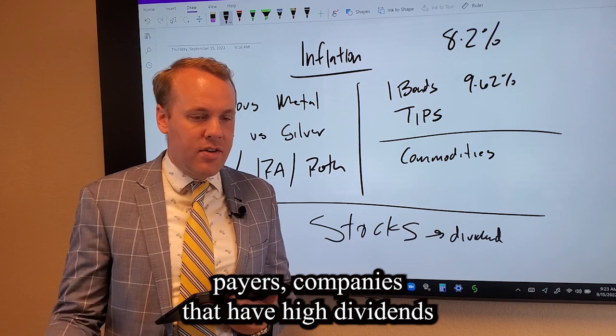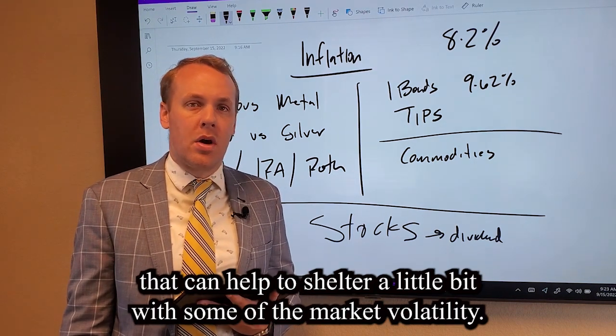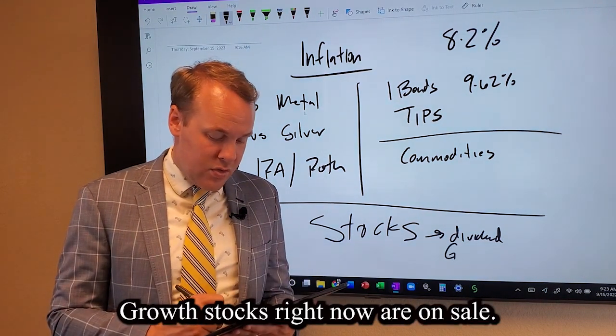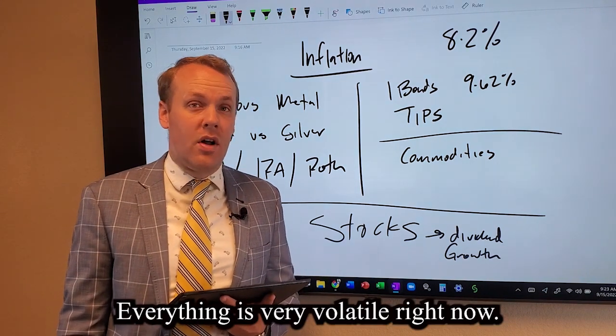A lot of people right now are looking at dividend payers. Companies that have high dividends can help to shelter a little bit with some of the market volatility. That might be a good option to consider. Growth stocks right now are on sale. Everything is very volatile right now.